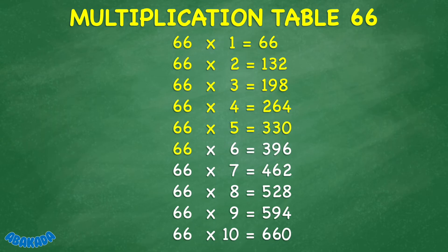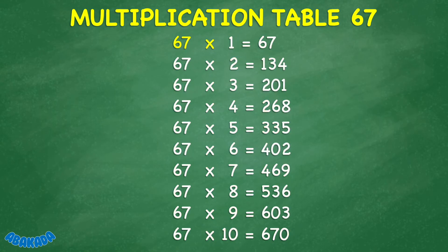66 times 6 equals 396. 66 times 7 equals 462. 66 times 8 equals 528. 66 times 9 equals 594. 66 times 10 equals 660. 67 times 1 equals 67.